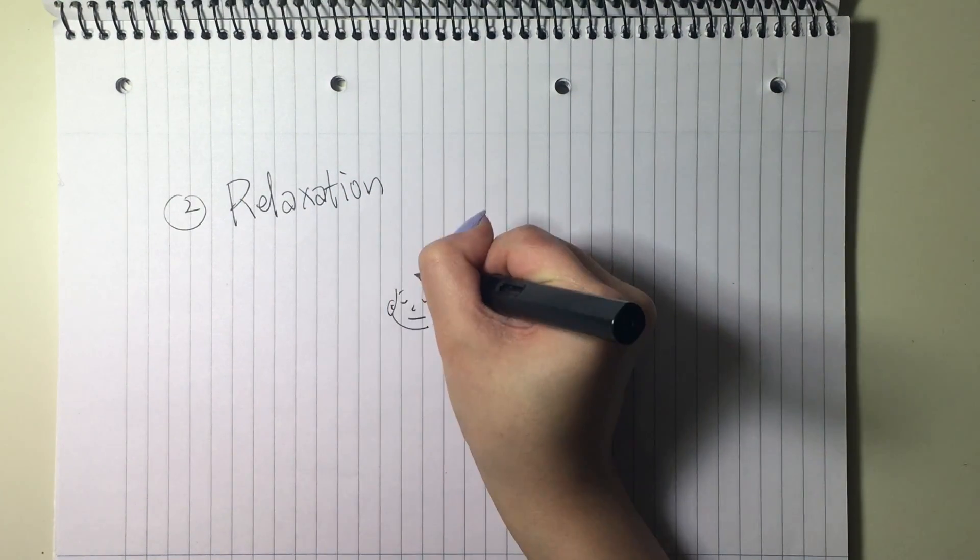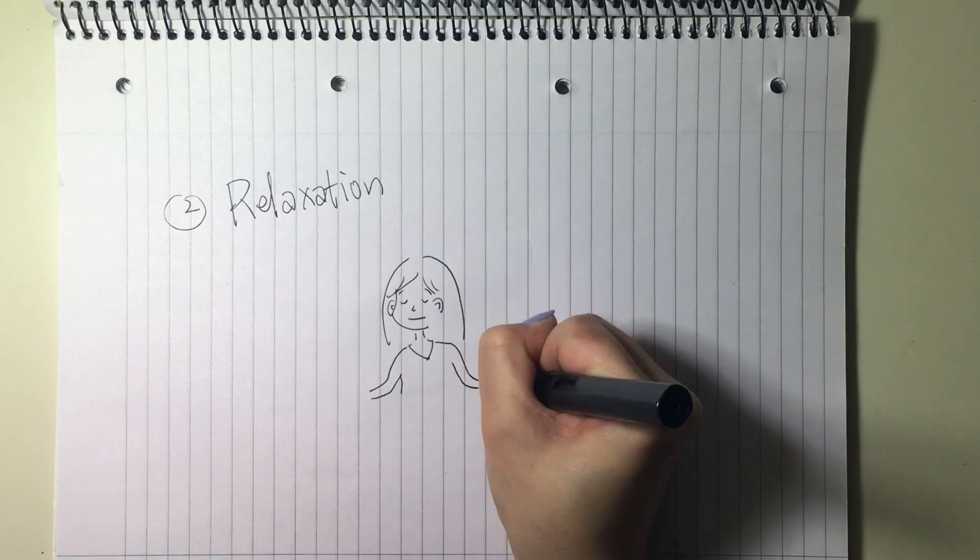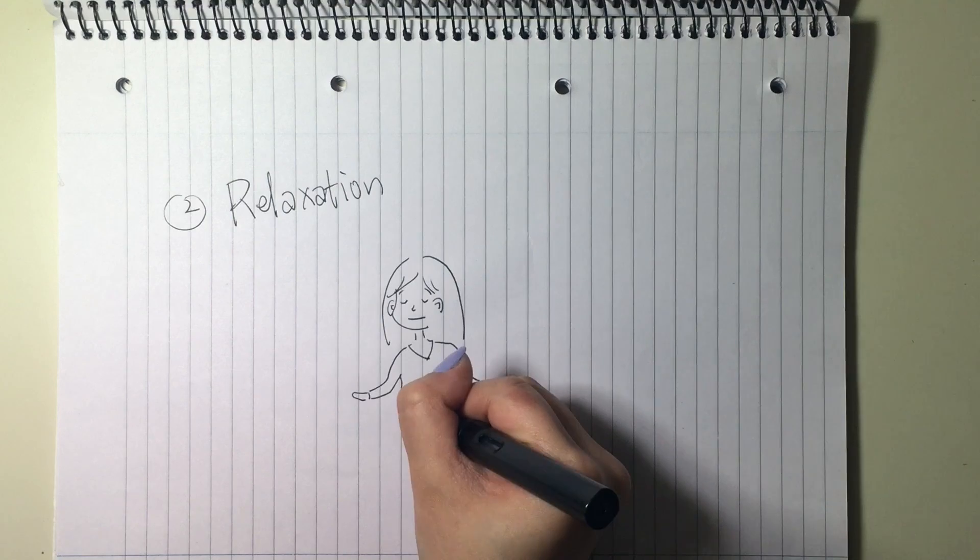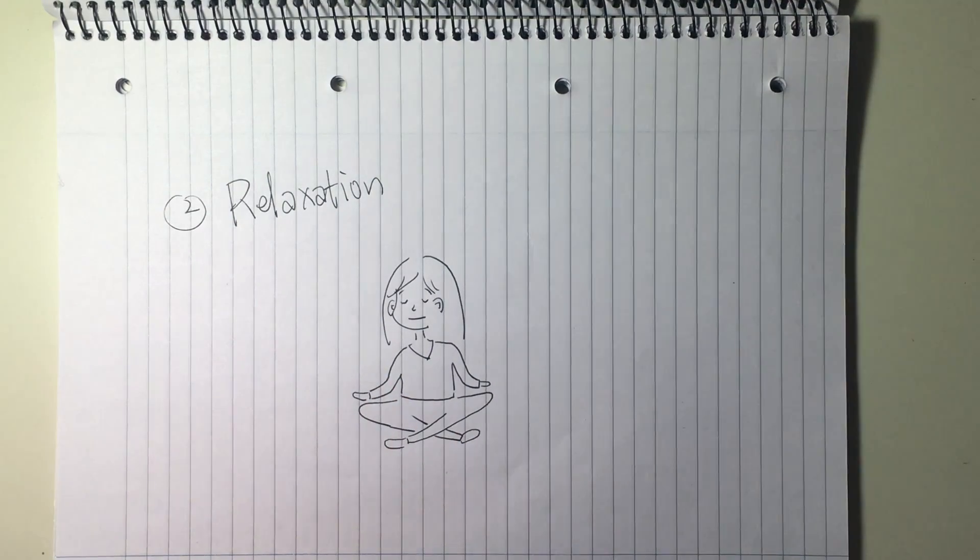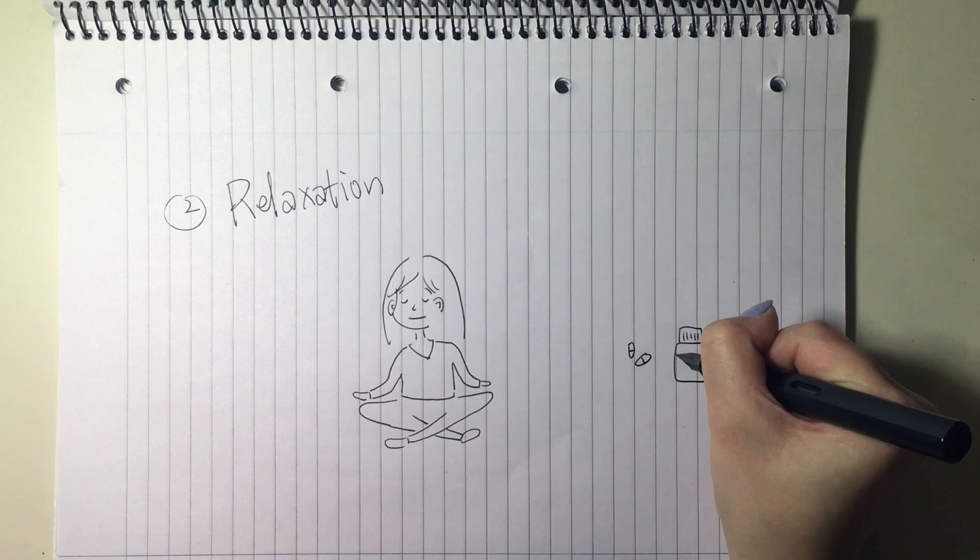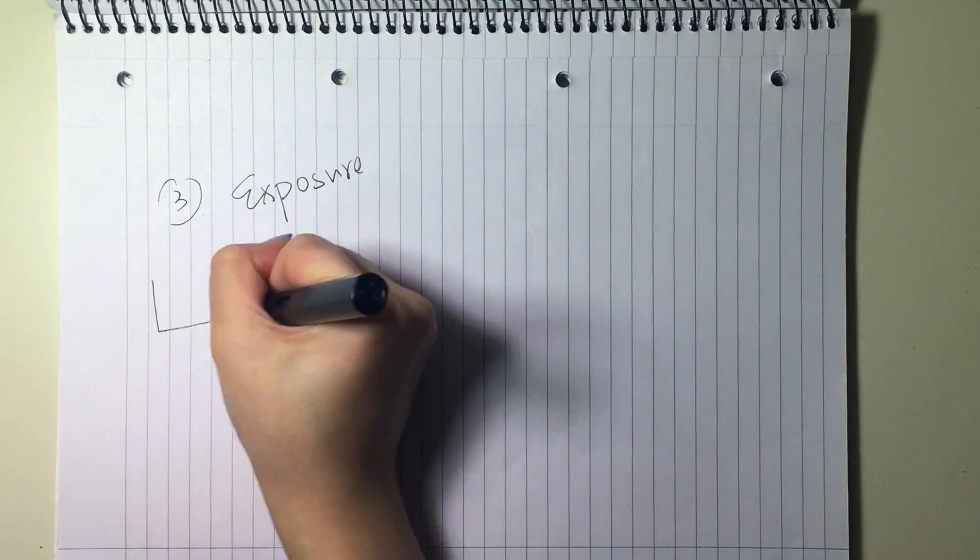The second stage is relaxation. The therapist teaches the patient to relax as deeply as possible. This might involve breathing exercises. Alternatively, the patient might learn mental imagery techniques. Patients can be taught to imagine themselves in relaxing situations, or they might learn meditation. Alternatively, relaxation can be achieved using drugs.